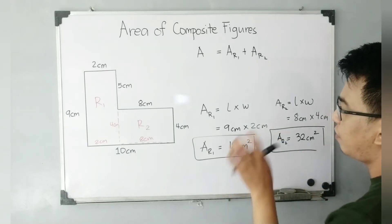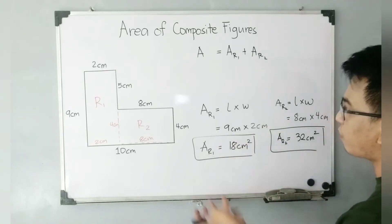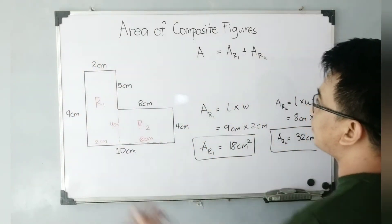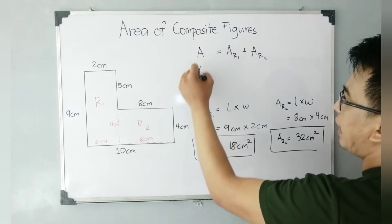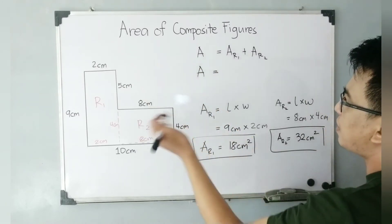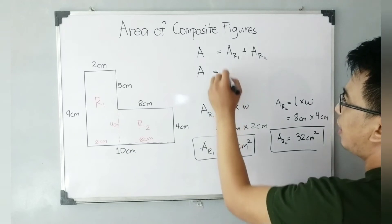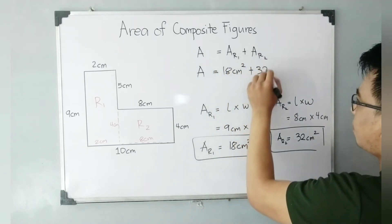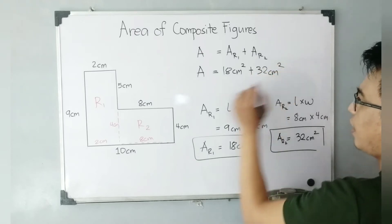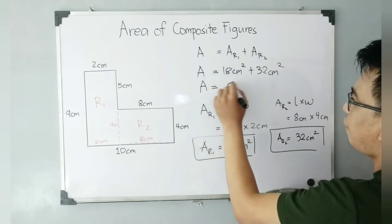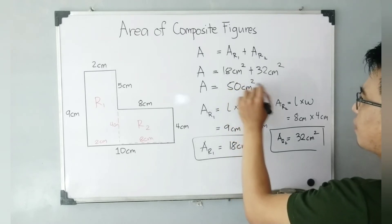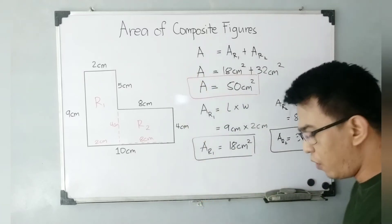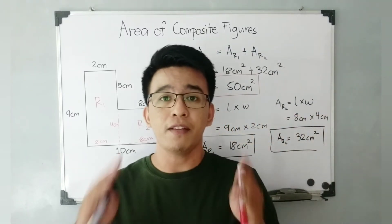Since we already have the area of both rectangles, we can calculate the area of the full composite figure by adding them. The area of the composite figure is 18 centimeters squared plus 32 centimeters squared, and that gives us the answer of 50 centimeters squared.